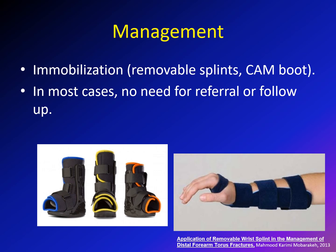Regarding management, for immobilization we do not have to apply a cast. You can put just a removable splint or a CAM boot — a controlled ankle motion boot. In most cases, there is no need for referral to an orthopedic surgeon or follow-up. If you feel comfortable that this is a torus fracture, for the distal radius you can apply a removable splint and tell the family to use it for about two to three weeks — usually two weeks is more than enough. If it's in the lower extremity, you can use a CAM boot for two to three weeks. There is no need to sleep with the CAM boot or removable splint. If you feel comfortable, you do not need to refer the patient or see them for follow-up.